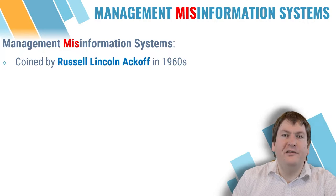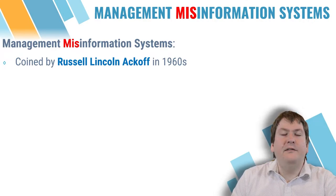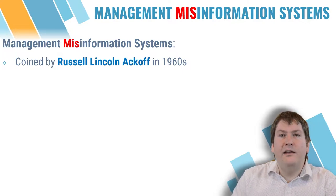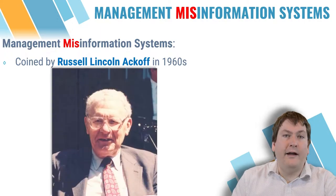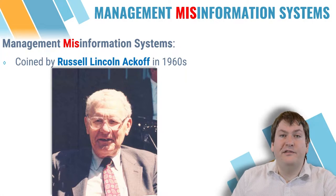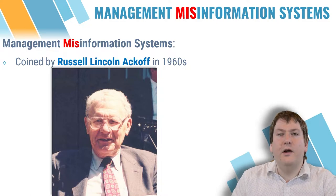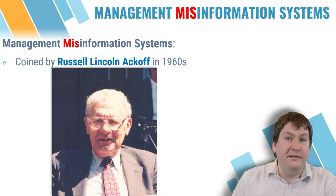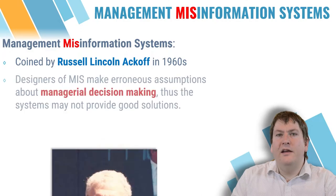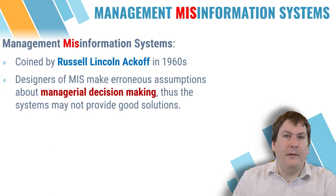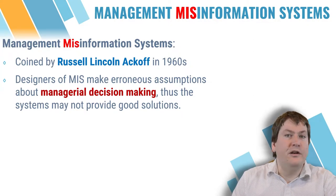While SAGE and management information systems of the time were surely impressive — especially in size — simply throwing a computer at the problem does not necessarily improve decision-making. This was famously described by Russell Ackoff in the 1960s, when we started seeing information systems become prevalent in business. In his work, he described MIS as 'management misinformation systems.' His concern was that the designers of MIS make false assumptions about decision-making that lead to such systems not producing good solutions.